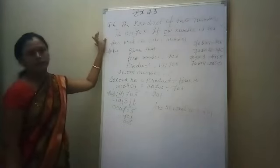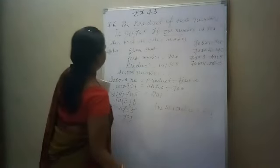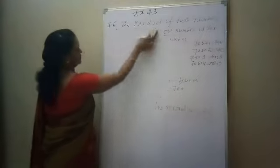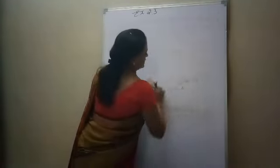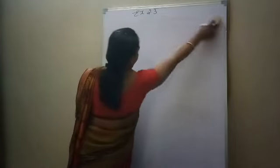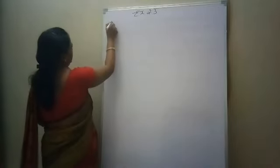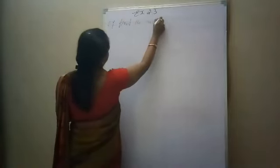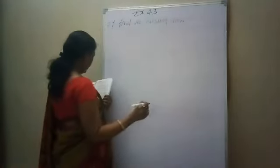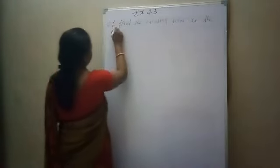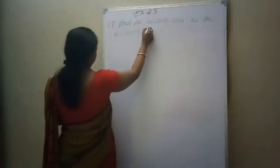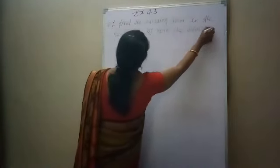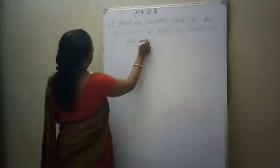Now we will continue our class with question number 7. Question number 7 is the last question of exercise number 2.3, and then our chapter number 2 is over. Question number 7: find the missing term in the following by using the division algorithm. Now look at here — how can we solve this?